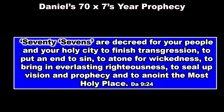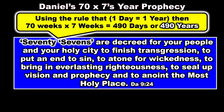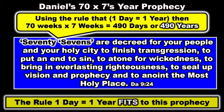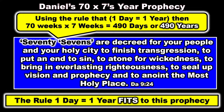Now let's look at Daniel's 70 times sevens year prophecy: '70 sevens are decreed for your people in your holy city to finish transgression, to put an end to sin, to atone for wickedness, and to bring in everlasting righteousness, to seal up the vision and prophecy, and to anoint the most holy place.' Using the rule that one day equals one year, then 70 weeks equals 70 times seven, or 490 days, or 490 years. The rule one day equals a year fits this prophecy.